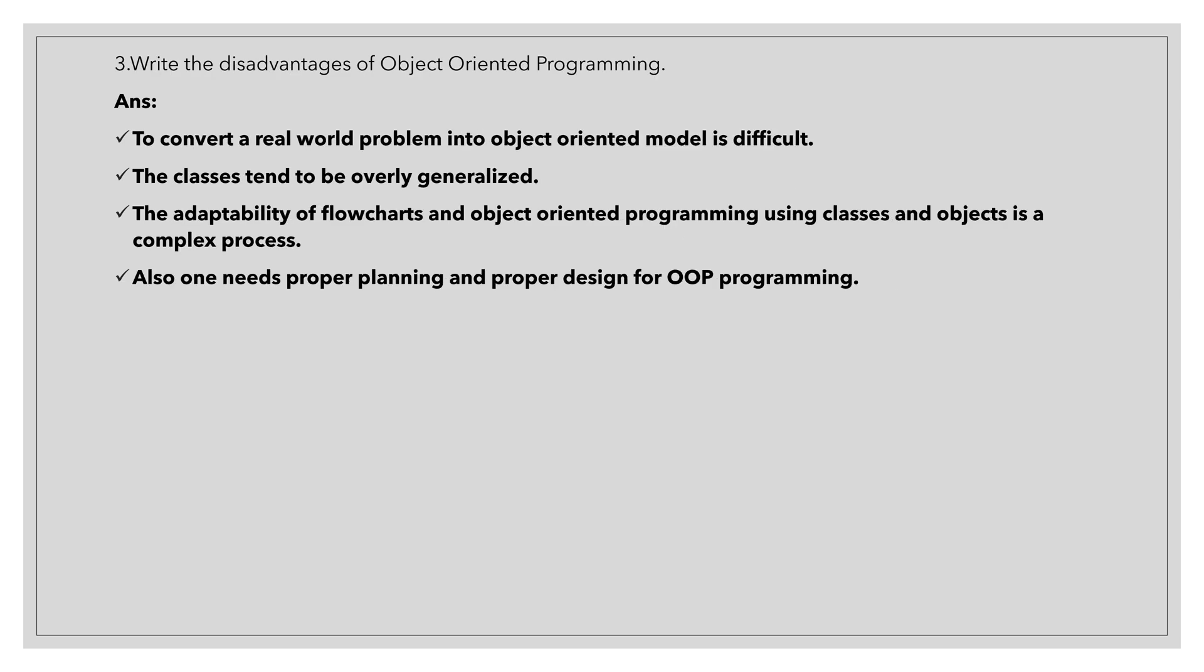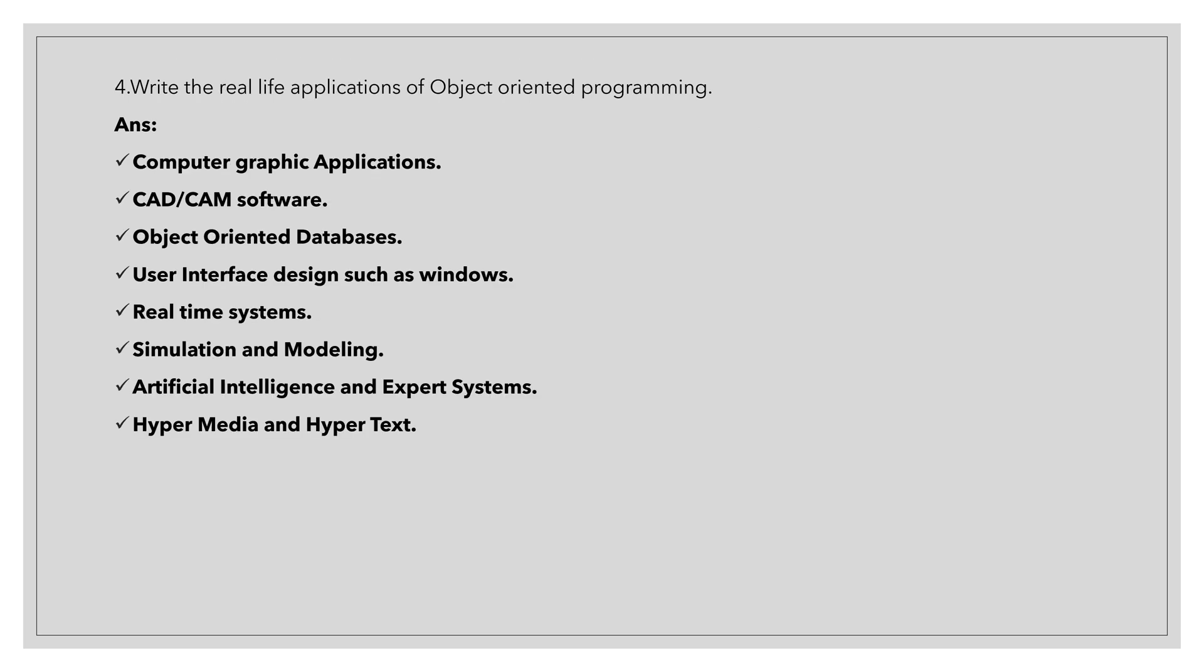Next question is, write the advantages of object-oriented programming. List out all the disadvantages of object-oriented programming. The last question is, write the real-life applications of object-oriented programming. Mention all the applications of object-oriented programming. If you are thorough with these questions, it's easy to score seven marks from this chapter. Hope this video will help you to learn these questions easily for your exam. Thanks for watching.